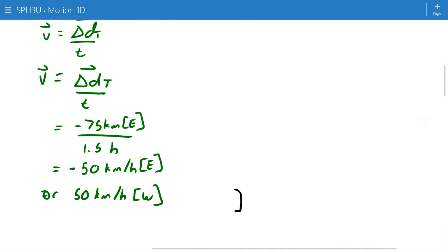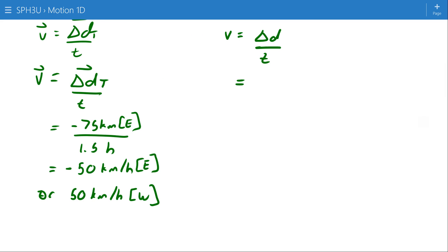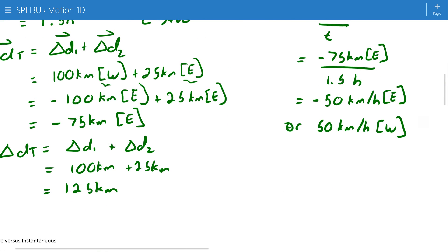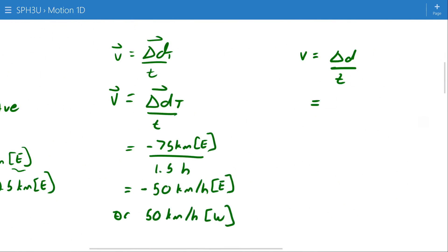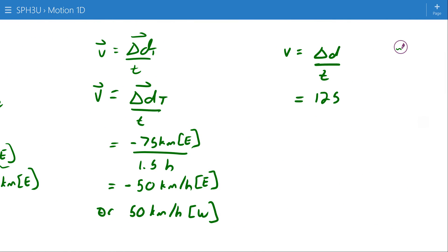Alternatively, I can do the same thing for speed. Speed is equal to my distance per unit time. And in this case, my total distance was 125 kilometers in that same 1.5 hours. That works out to 83.3 kilometers per hour. No direction here, obviously ignoring direction.